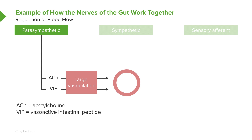The first is acetylcholine and the second is vasoactive intestinal peptide. Both of these are released from parasympathetic nerves and vasodilate, or increase the luminal size of the blood vessels.